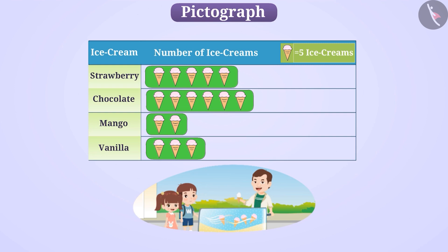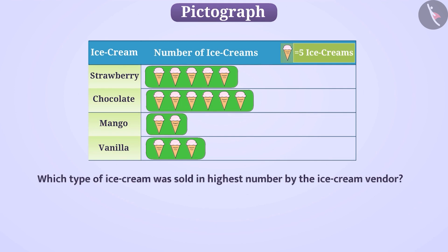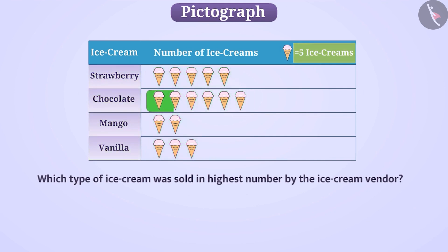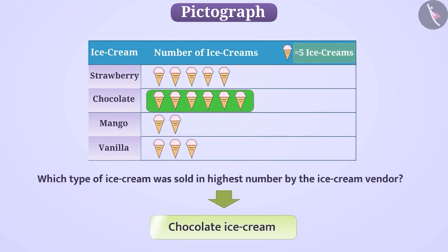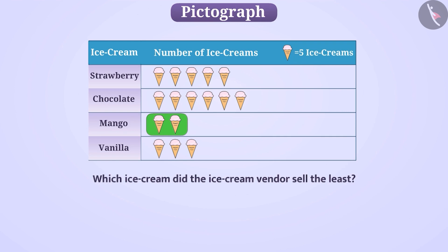Can you tell me which type of ice cream was sold in the highest number by the ice cream vendor? Here, maximum images are drawn in the row of chocolate ice cream, which tells us that the ice cream vendor sold chocolate ice cream the most. Similarly, the least number of images are drawn in the row of mango ice cream, so the ice cream vendor sold mango ice cream the least.